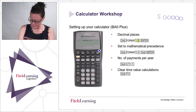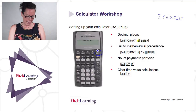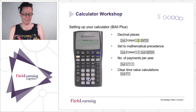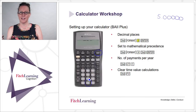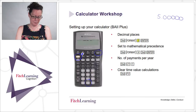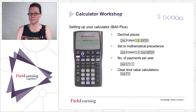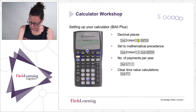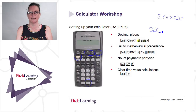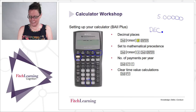Turn your calculator on. Above the decimal point button in yellow writing it says 'format' — that's what we need to get into. The yellow writing above each key is accessed by the shift button. So if we do shift then format, the first thing that should come up is DEC, which stands for decimal. If not, use your scroll arrows to scroll up and down until you get to DEC.